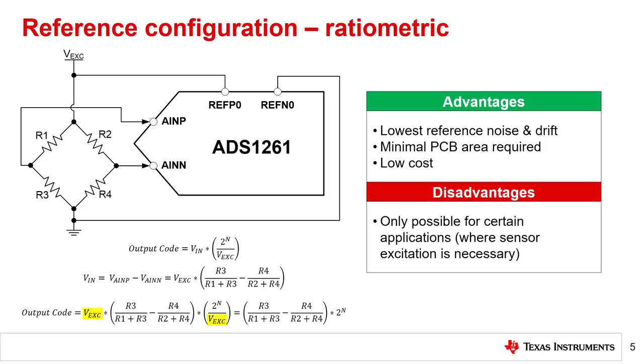The main disadvantage of the ratiometric reference is that it can only be used for applications where sensor excitation is necessary.